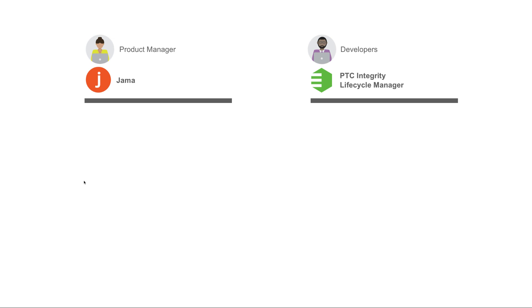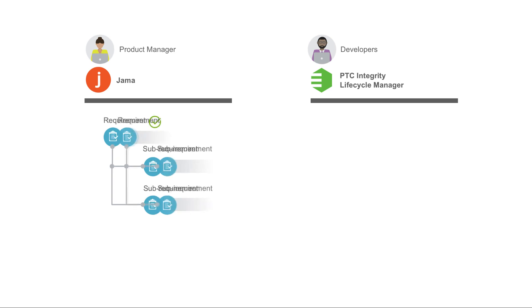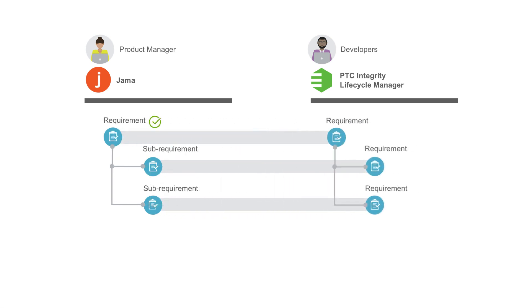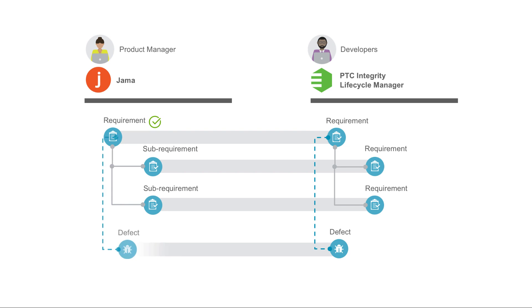In our demo, a product manager defines a requirement and two sub-requirements in JAMA. When the requirements are ready for development, TaskTop flows them from JAMA to PTC Integrity, where a software developer will begin to work on them. As development progresses and the artifacts are updated in PTC, TaskTop will keep both systems in sync, and when a blocker defect is found in PTC and linked to the original requirement, it will flow back to JAMA for the product manager's visibility.